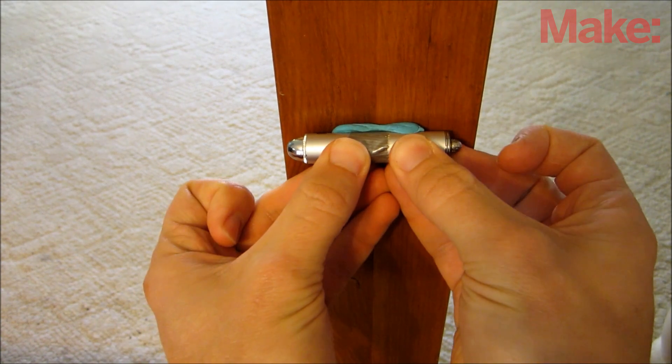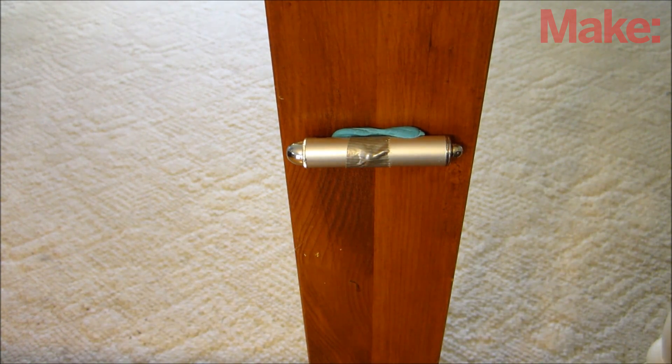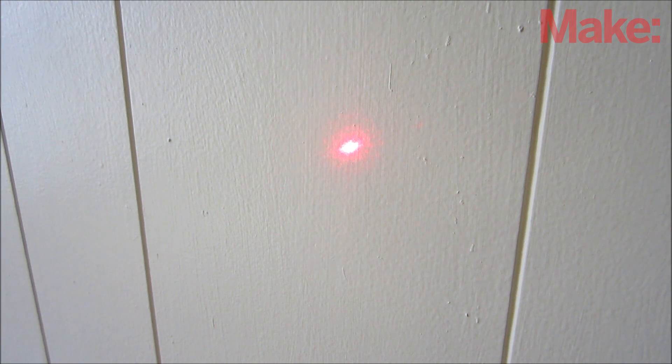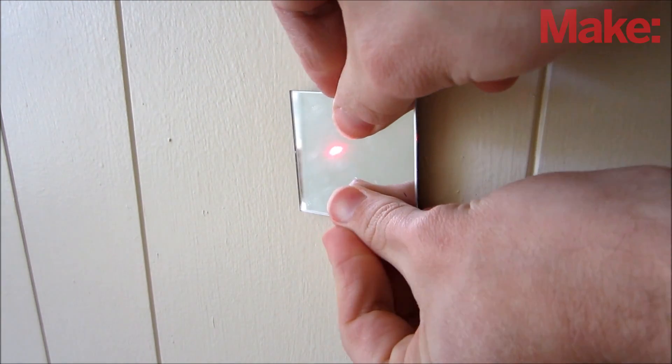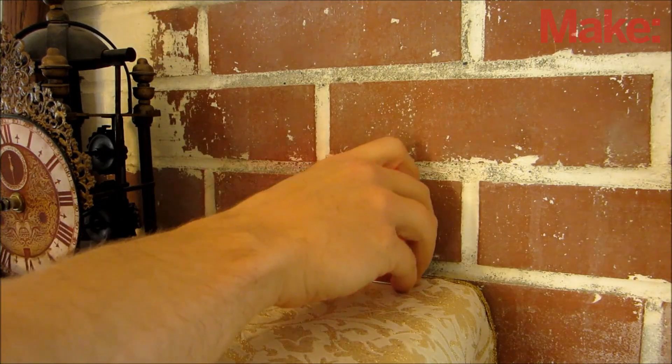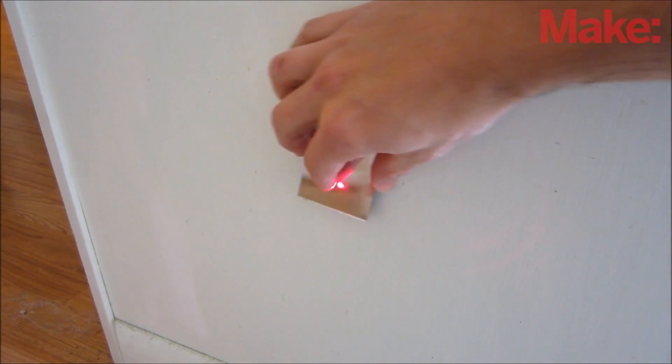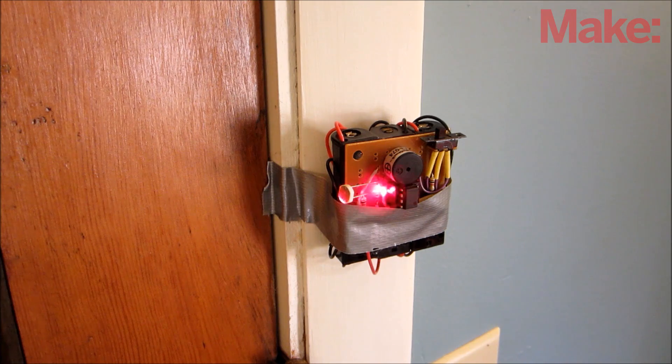To set up a multi-beam tripwire, start by mounting the laser pointer. Then at the point where the beam hits the opposite wall, mount a mirror at a slight angle. Continue adding as many mirrors as you want. The last mirror should direct the light to the alarm circuit.